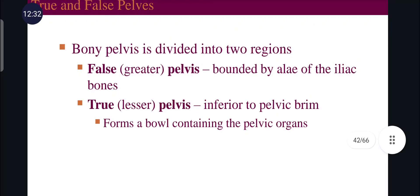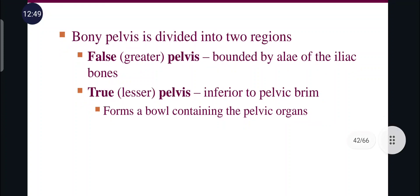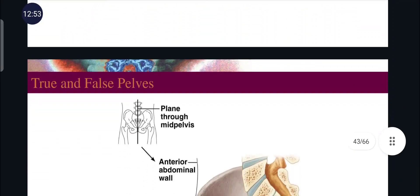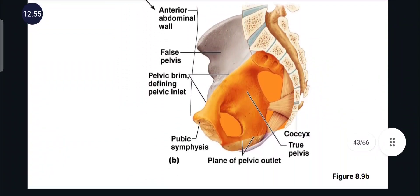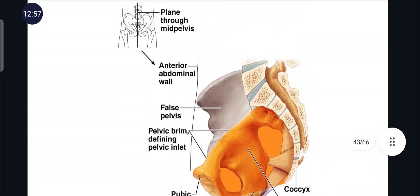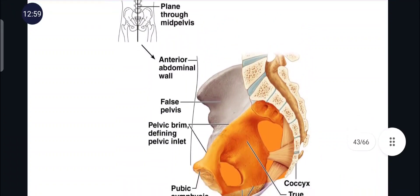The bony pelvis is divided into two regions: the false pelvis, bounded by the iliac bones, and the true pelvis, which is inferior to the pelvic brim and forms a bowl containing the pelvic organs. The true pelvis contains the pelvic organs, while the false pelvis forms the rim of the pelvic basin.